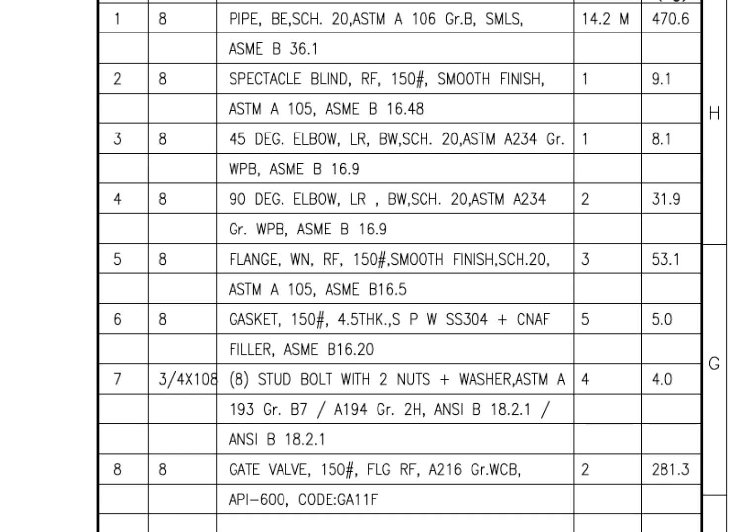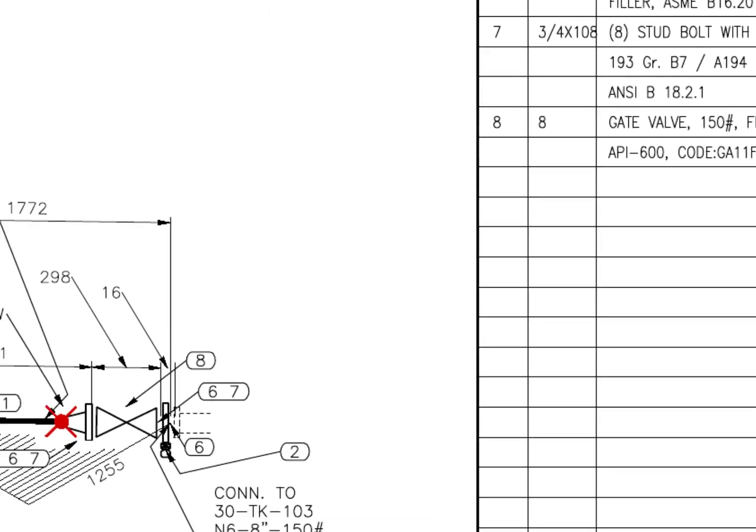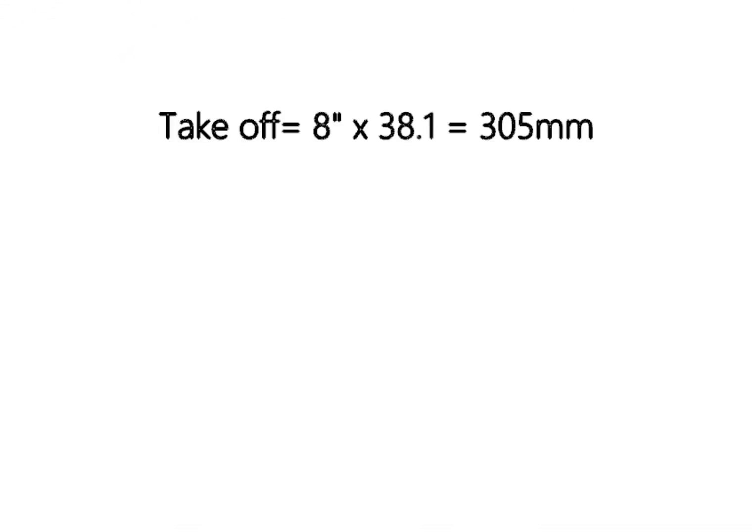Let us calculate the true length of the pipe. To calculate the true length, we need to know two things: the take off length and the welding gap. How to calculate the take off of a long radius 90 degree elbow? The formula is diameter in inches multiplied by 38.1. Let us assume the welding gap is 3 millimeters.